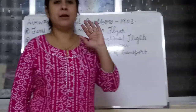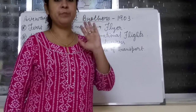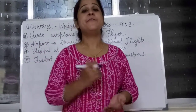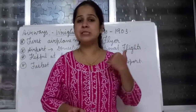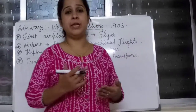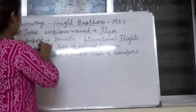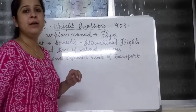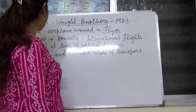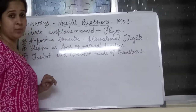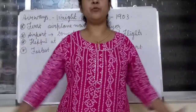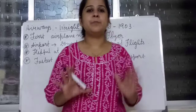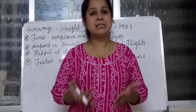The first plane invented by them was named Flyer. If you are asked what was the name of the first airplane, you have to write the name Flyer — it was the first airplane invented by the Wright brothers. An airport is that huge place where airplanes are landing and taking off, and where they are maintained.